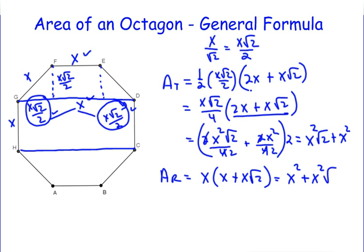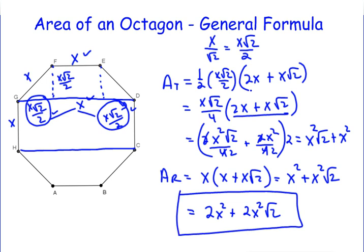I told you that we would prove to you that the area of the rectangle is the same as the area of the two trapezoids. So our formula becomes 2x squared plus 2x squared root 2, where x is a side length. A very nice and simple formula that's easy to remember on how to find the area of a regular octagon.